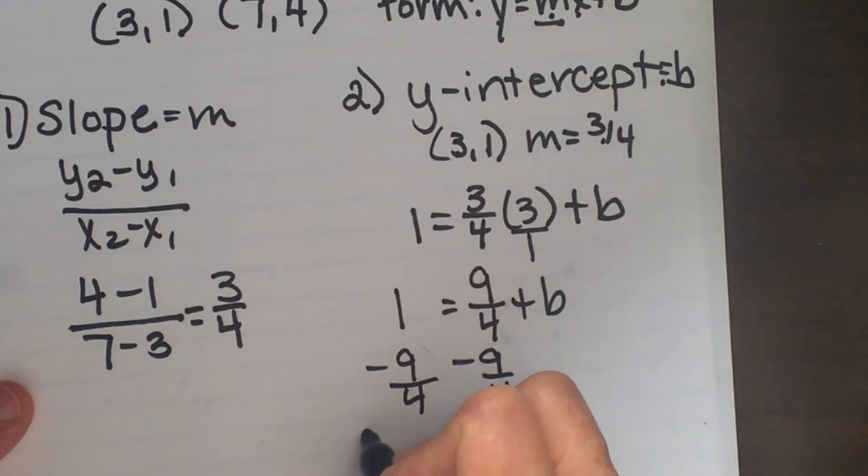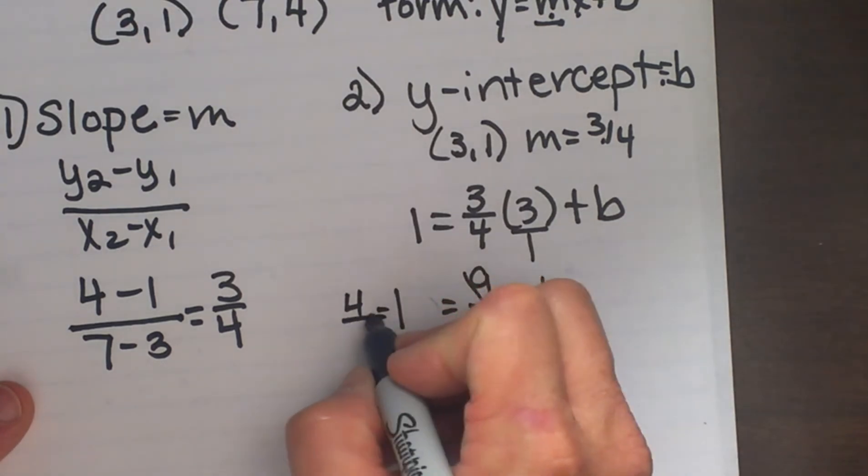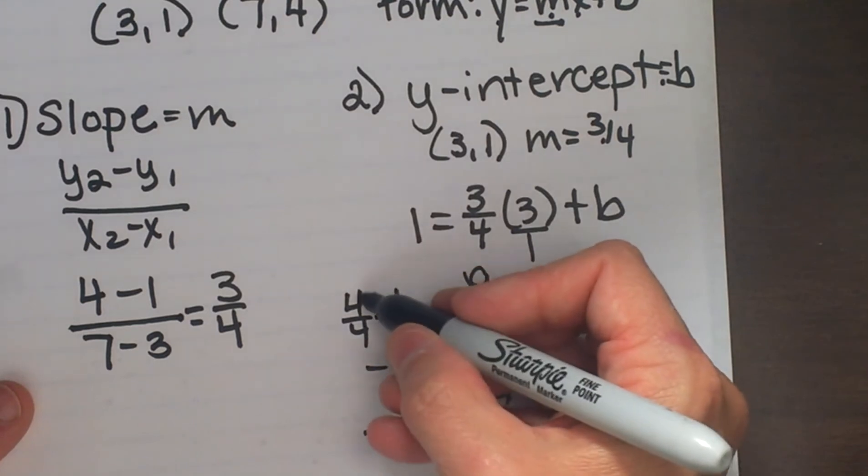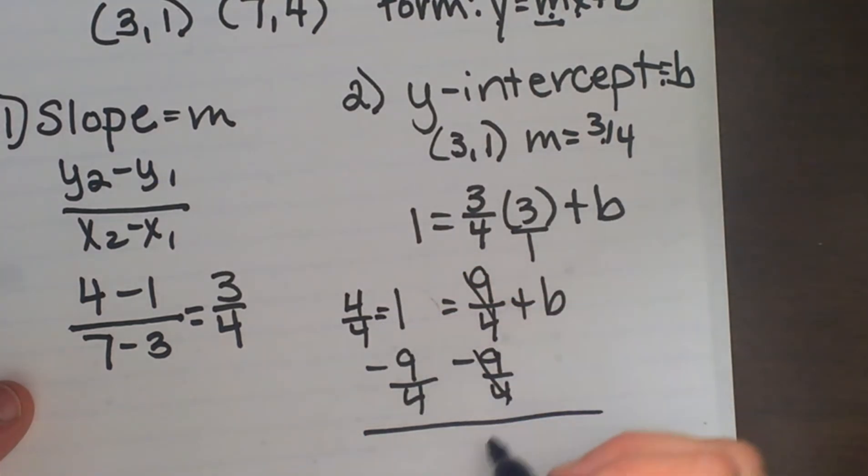Now when you have a whole number minus a fraction, I have to write this whole number as a fraction with a denominator of 4. So that is going to be 4/4. Anything over itself is 1, so 4/4 minus 9/4 is negative 5/4. And that is my value for b.